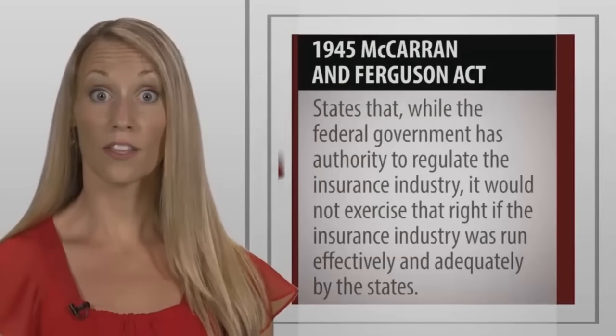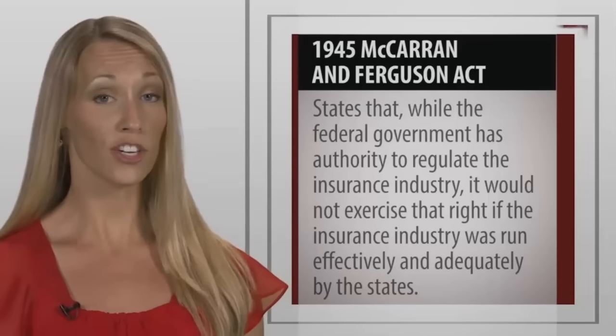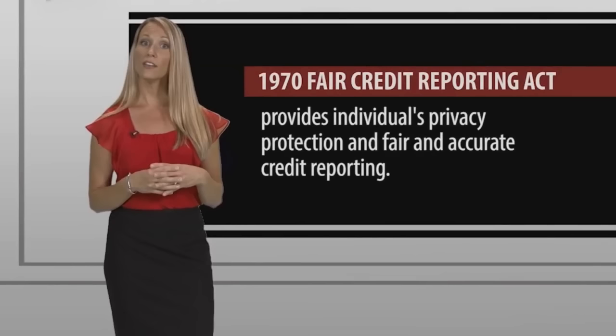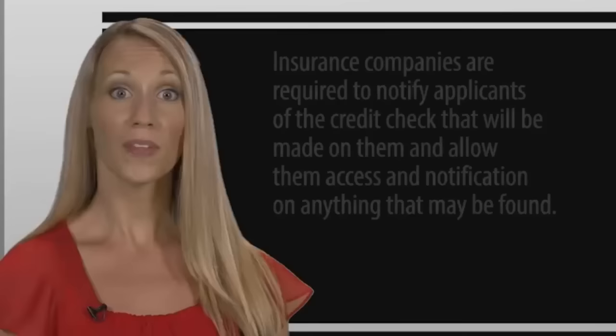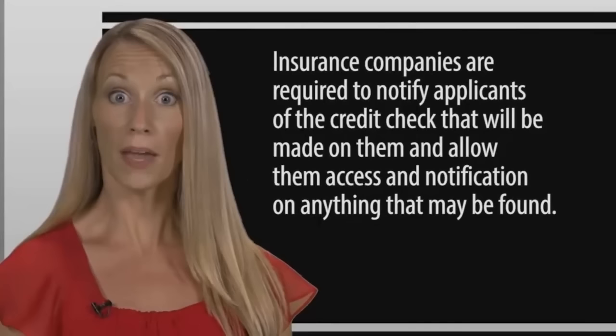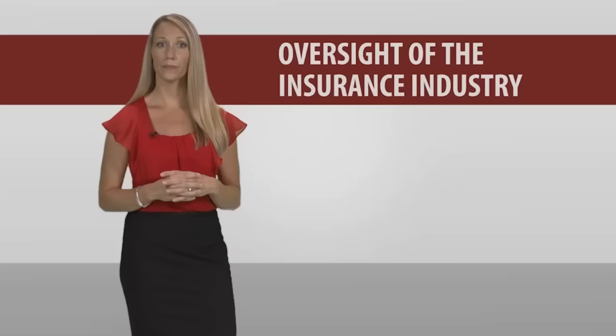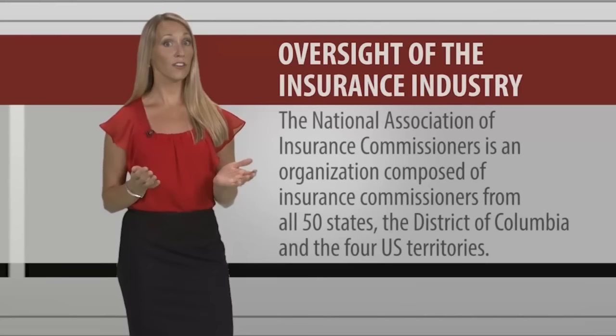History of insurance regulation: The 1945 McCarran-Ferguson Act states that while the government has authority to regulate the insurance industry, it would not exercise that right if the insurance industry was run effectively and adequately by the states. The 1970 Fair Credit Reporting Act provides individuals privacy, protection, and fair and accurate credit reporting. Insurance companies are required to notify applicants of the credit check that will be made on them and allow them access and notification on anything that may be found.